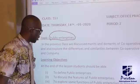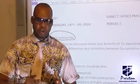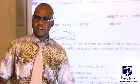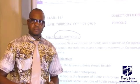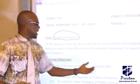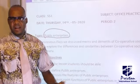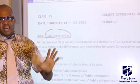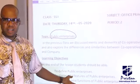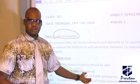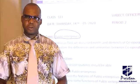Now let's discuss the features of public enterprise. Number one, it is owned by the government. Number two, it is financed by the government. Number three, it is managed by the government, and the government dictates what happens to the enterprise. They sell their goods at a very reduced price. They are also formed to assist the citizens and provide essential facilities and services to the citizens.